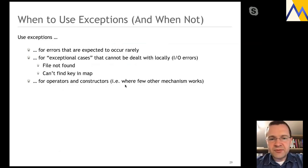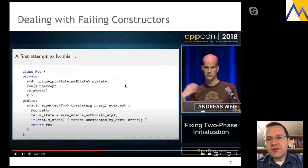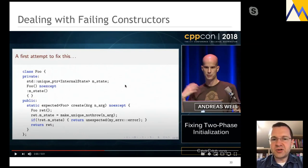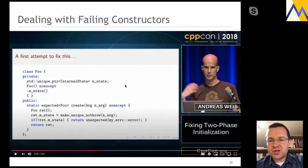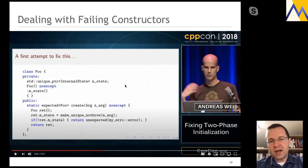Allow me one remark: if you cannot use exceptions and want to probably deal with failing constructors, I recommend a talk by Andreas called Fixing Two-Phase Initialization — a five-minute lightning talk that very nicely explains what you can do to fix the usual approach of first calling a constructor that does some half work and then calling an init function later.